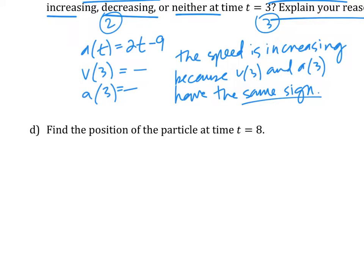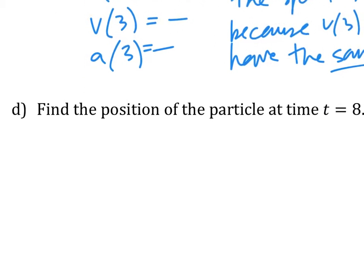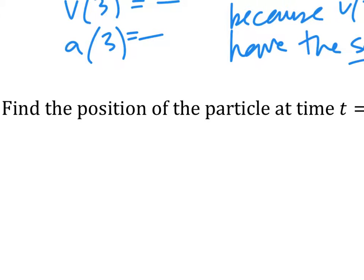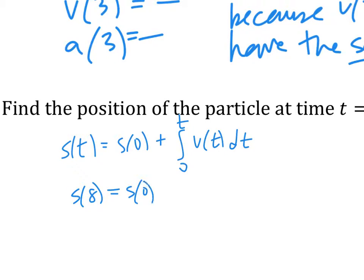Last one. Find the position at t equals 8. Remember, there is an initial position. Find the position at t equals 8. Okay, so s of t is equal to s of 0 plus integral from 0 to t of v of t dt. This is just the position function. If you want to figure out what it is at 8, you would take the initial position plus the integral from 0 to 8. That is how much it has moved from a v of t dt. And the answer is 9 and 2 thirds. Okay, last question.